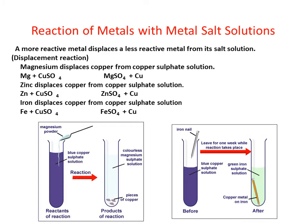How do metals react with metal salt solutions? A more reactive metal would displace a less reactive metal from its salt solution. For example, magnesium displaces copper from copper sulfate solution because magnesium is more reactive as compared to copper. Similarly, zinc would displace copper from copper sulfate solution as zinc is more reactive than copper. Iron also displaces copper from copper sulfate solution because iron is more reactive as compared to copper.